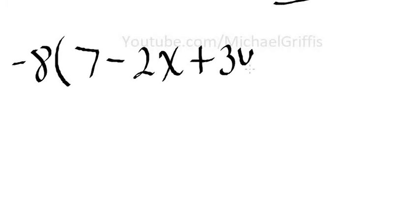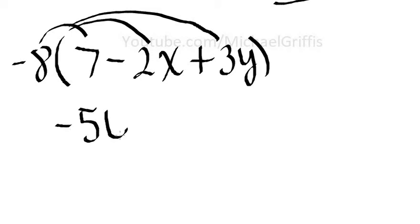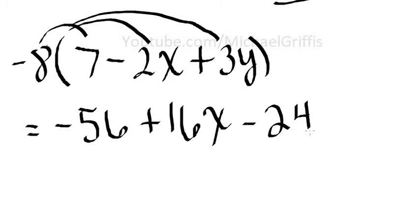We've got a couple more here. Negative 8 times 7 minus 2x plus 3y. Distribute to each one of these terms. Negative 8 times 7 is negative 56. Negative 8 times negative 2 is positive 16x. And negative 8 times 3 is negative 24y.